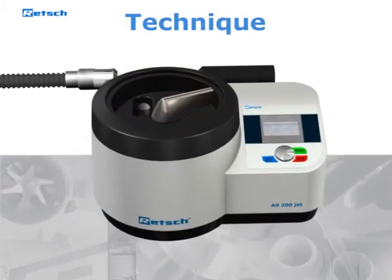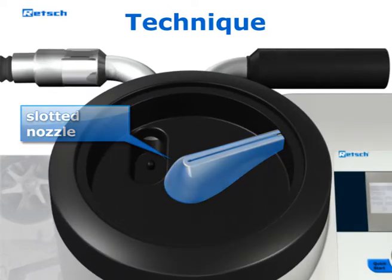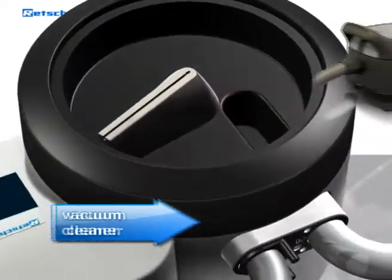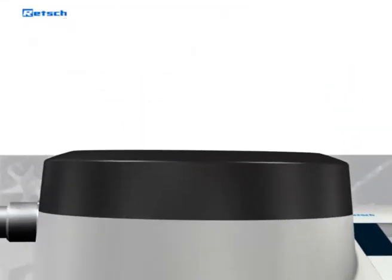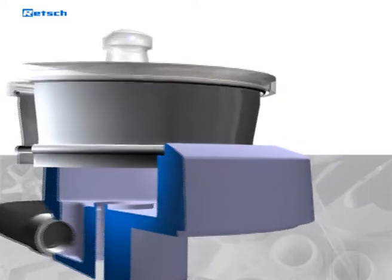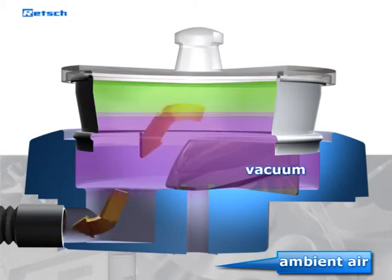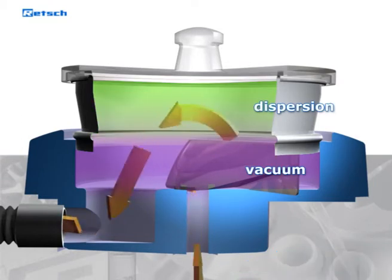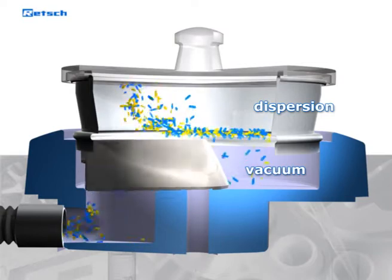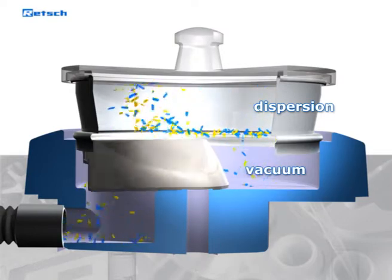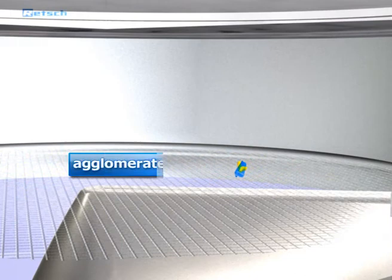The effectiveness of Airjet sieving is based on two components: a rotating slotted nozzle connected to the ambient air, and a high-performance industrial vacuum cleaner connected to the compartment. When the vacuum cleaner is turned on, it generates a vacuum inside the sieving machine. The resulting suction pulls ambient air through the slotted nozzle. The extremely narrow slot accelerates the supplied air and pushes it at high speed through the sieve mesh. The Airjet briefly disperses the particles on the sieve mesh before they are sucked through by the vacuum cleaner. Additionally, agglomerates are dissolved when they hit the cover.